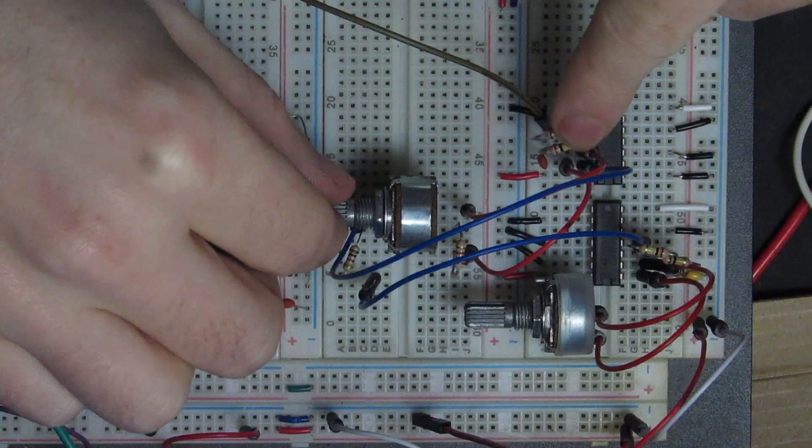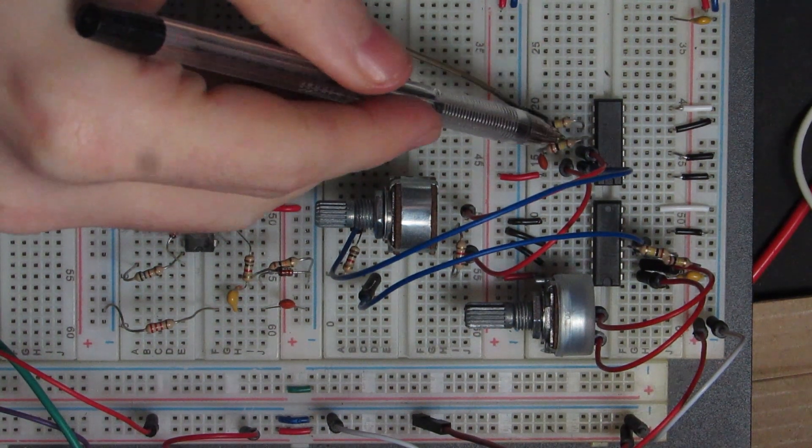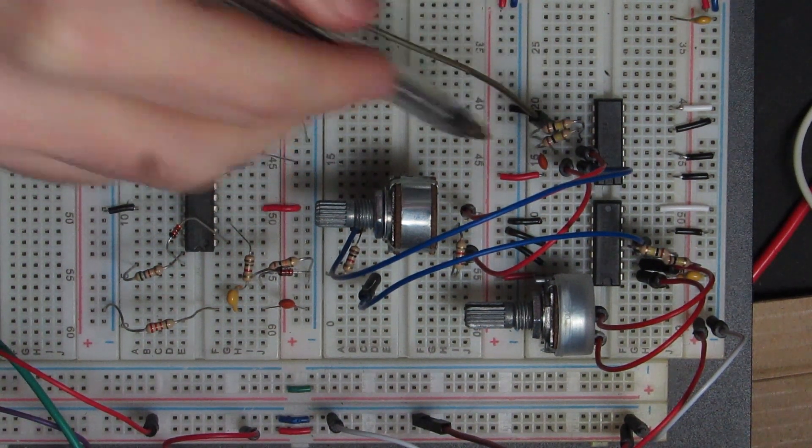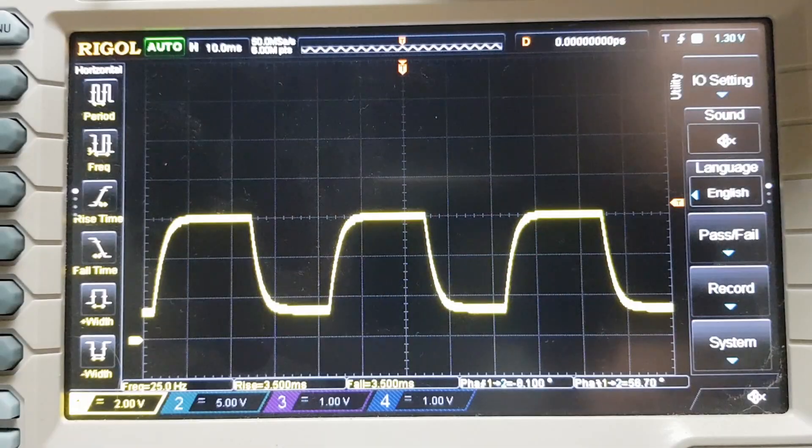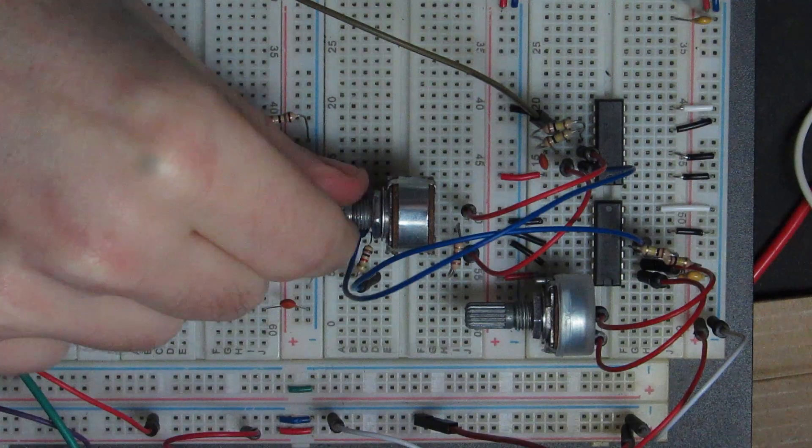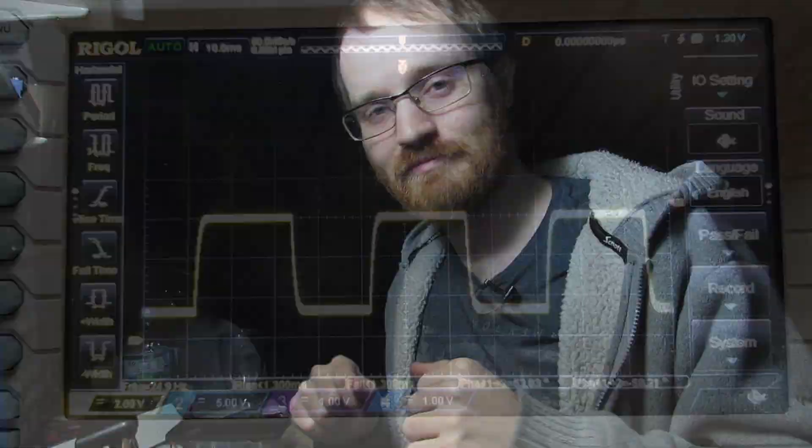Okay, and then finally, I've just added another inverting buffer with just 100k, which is this resistor here, and then 100k feeding back. So that's just buffered the output so that we can't load it down.